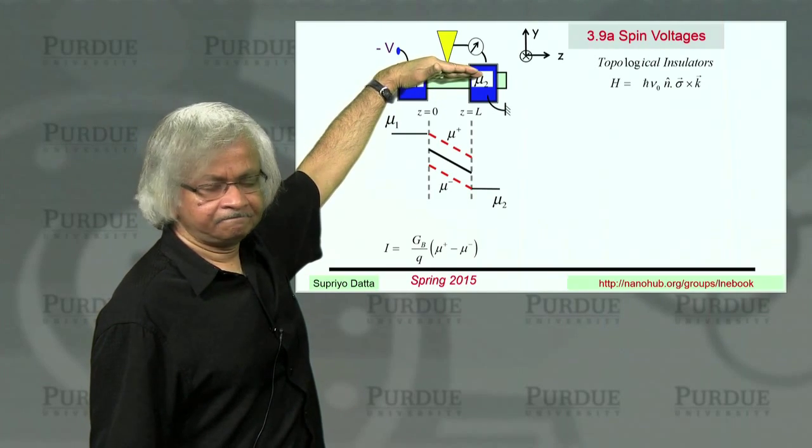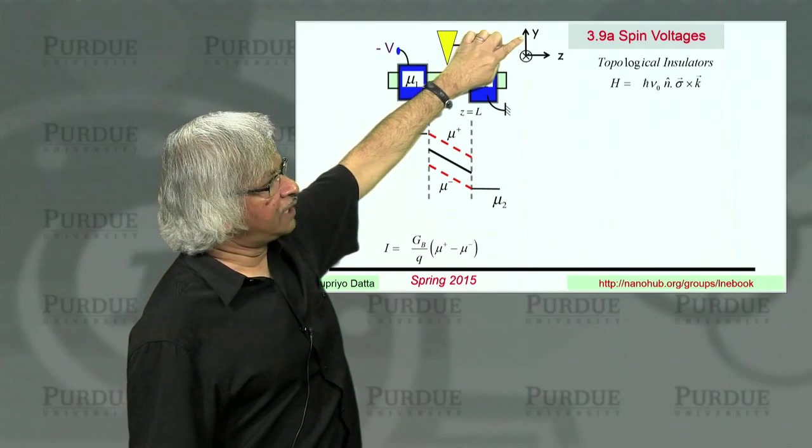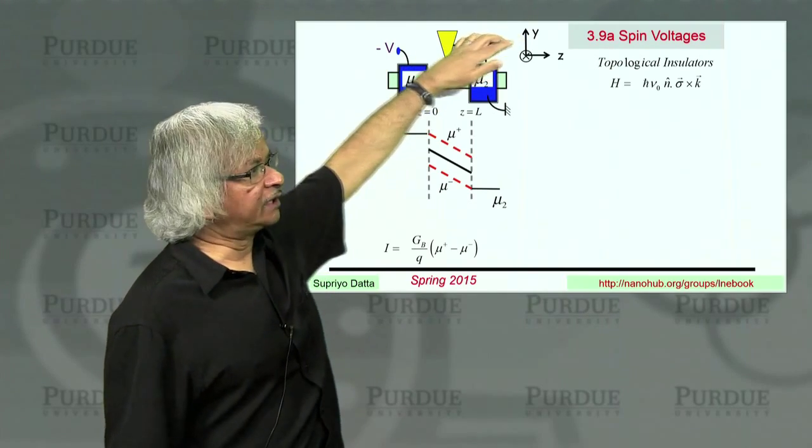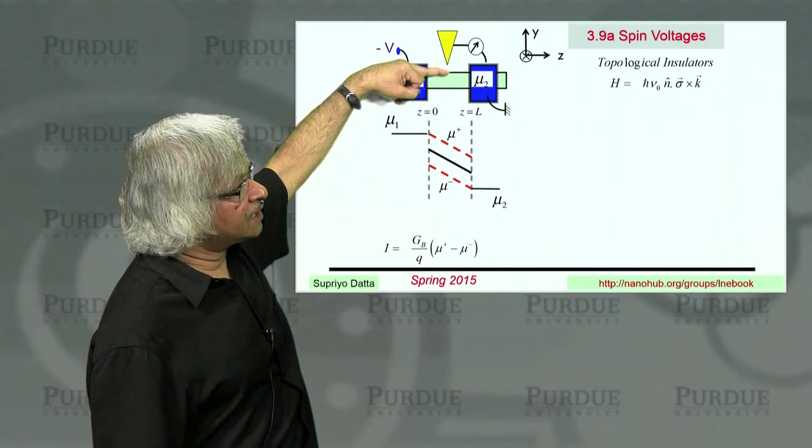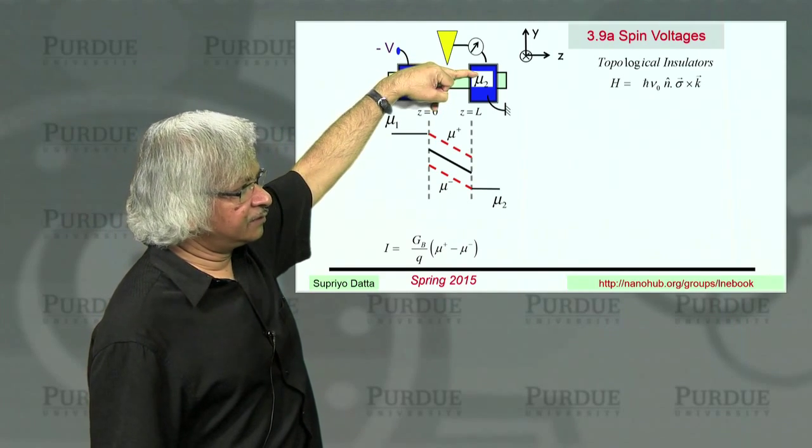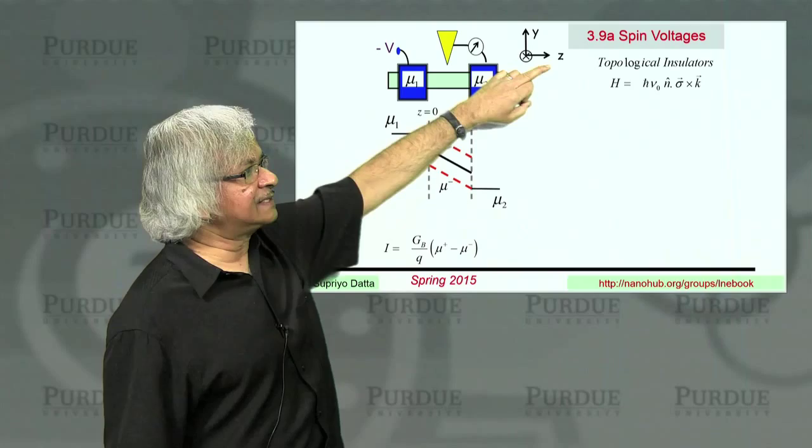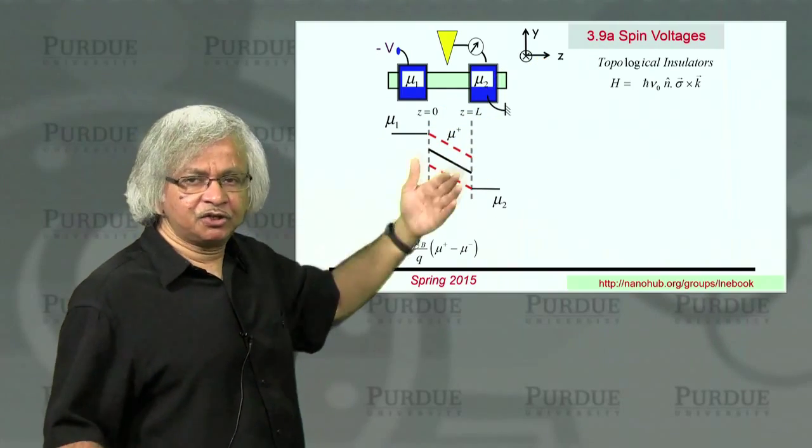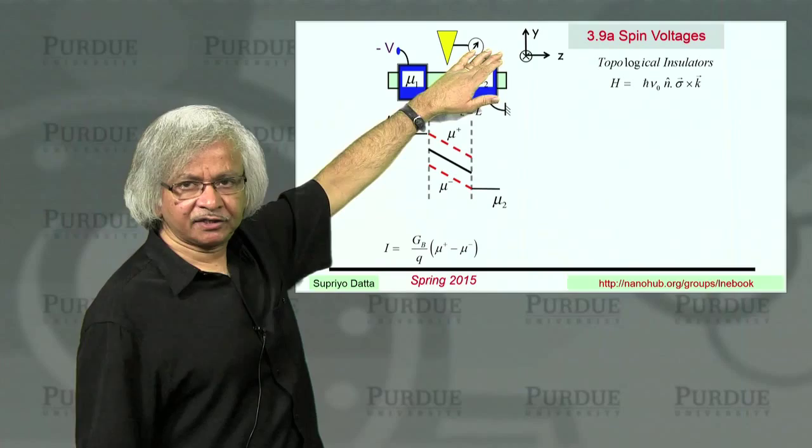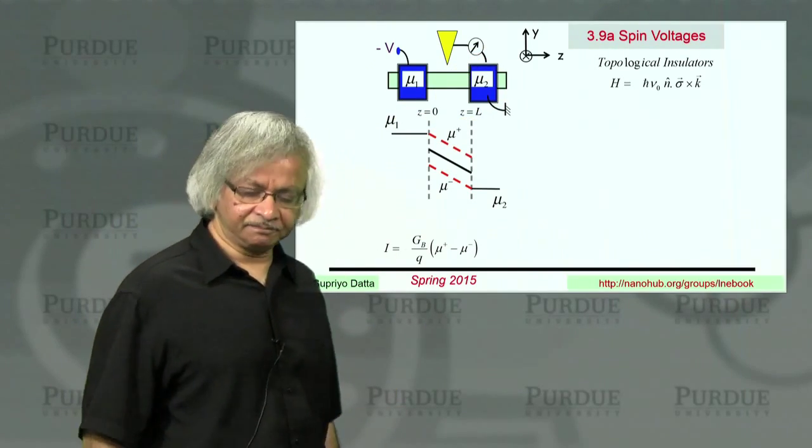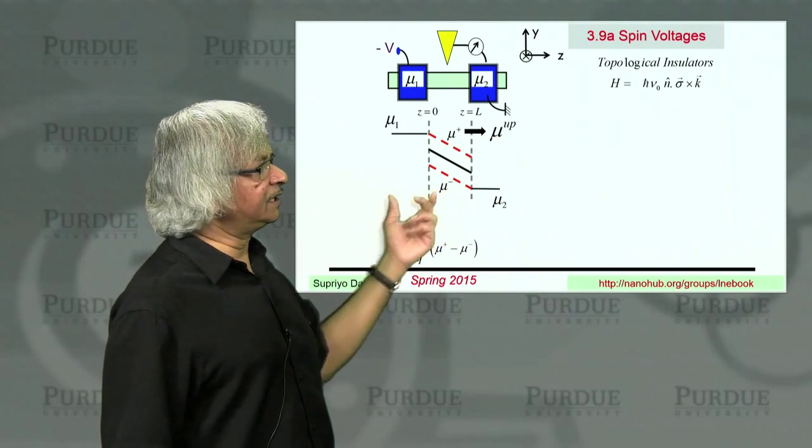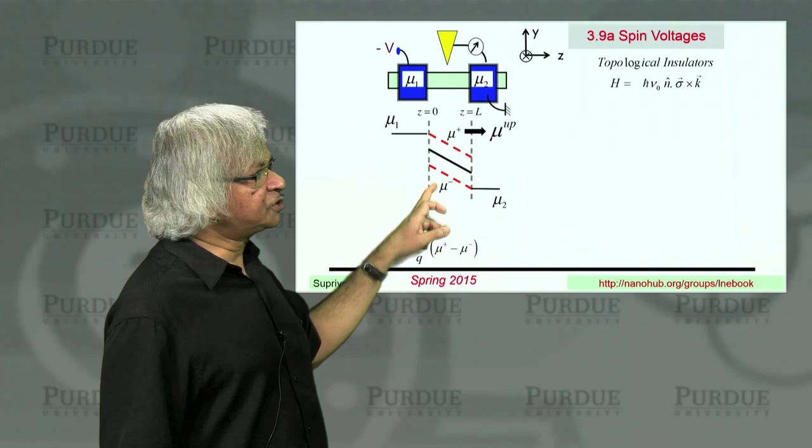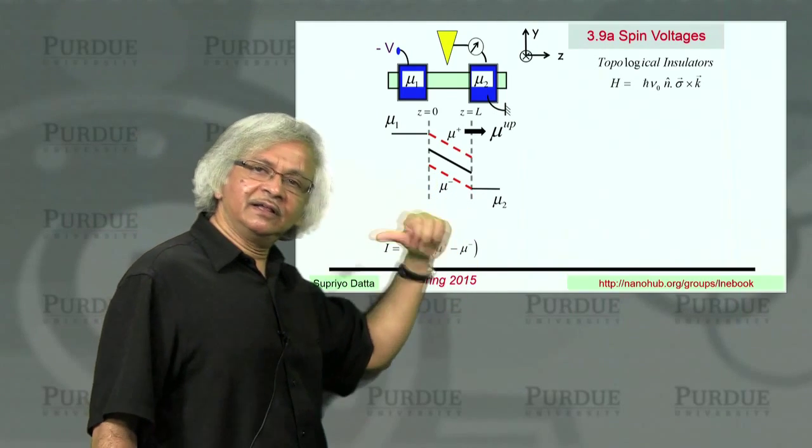So, if you're looking at the top surface, for example, for the top surface, y is the normal. So what that means is sigma cross k would be in the plus y or minus y directions. And so if you consider states moving to the right for which k is in the z direction, then the spin should be in the x direction. So that z cross x is in the y direction. So that's what you could call the upspin. And similarly, there will be a downspin which will be associated with states moving to the left.